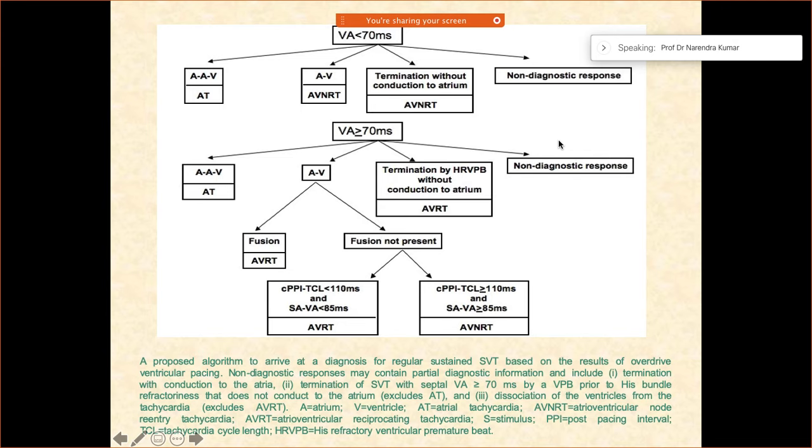Now the trick comes. If the VA interval is more than 70 milliseconds and you did RV entrainment or RV pacing and you saw AAV response, it is AT. However, if you saw VA-HIV response, it is characteristic for AVNRT. If you get a VAV response, that is characteristic of AVRT.